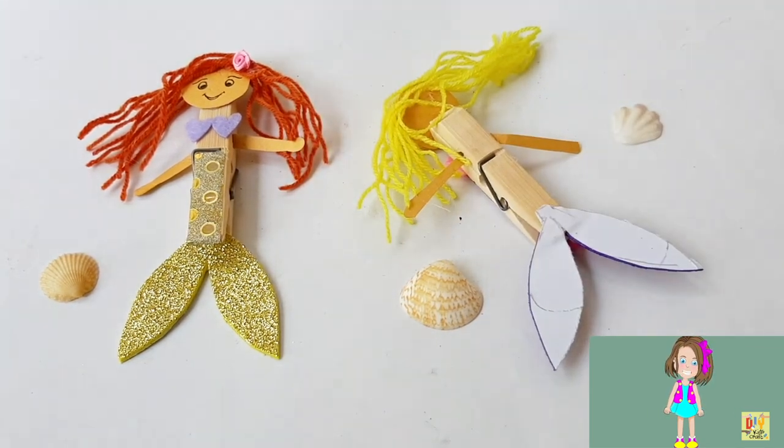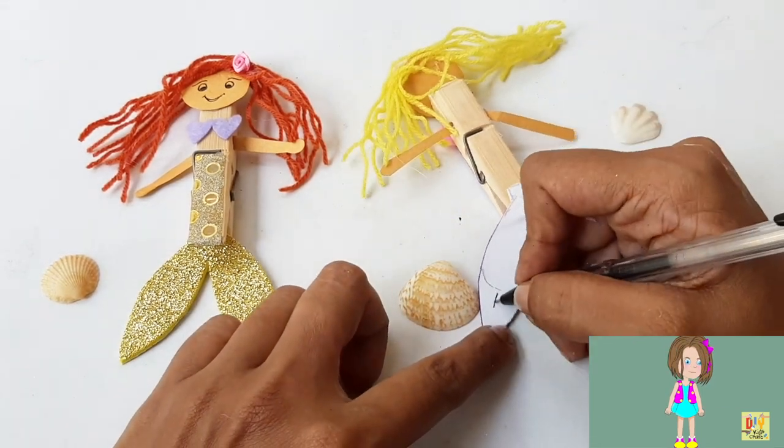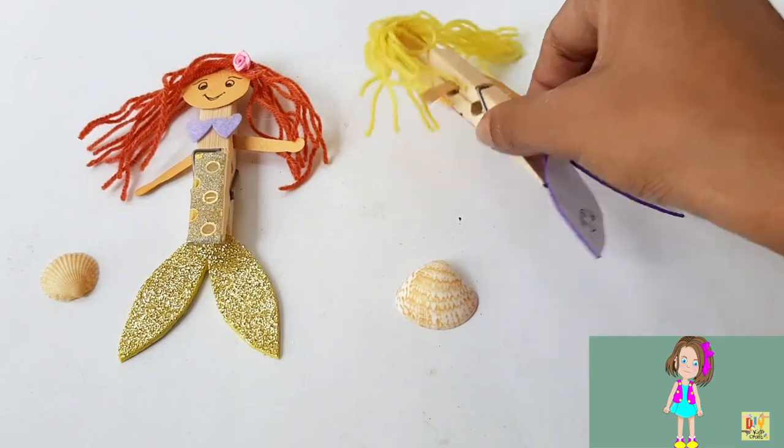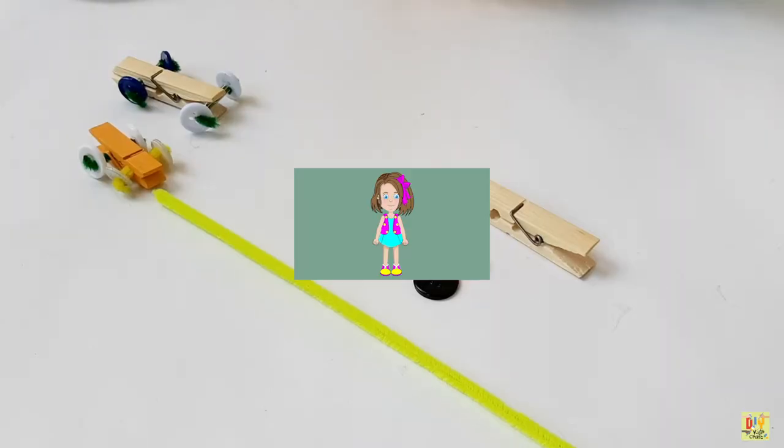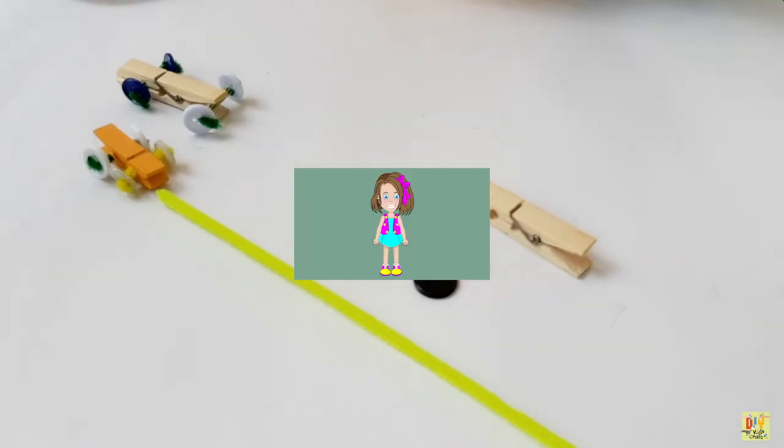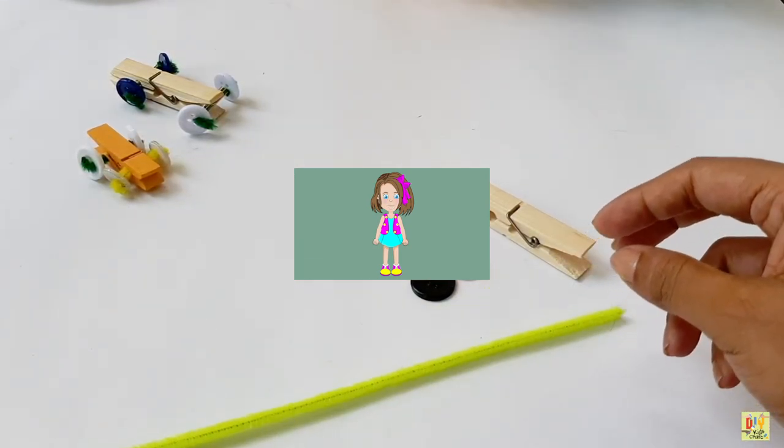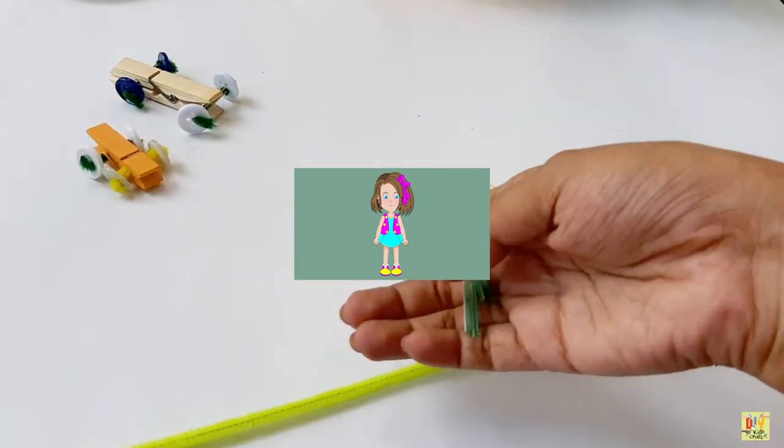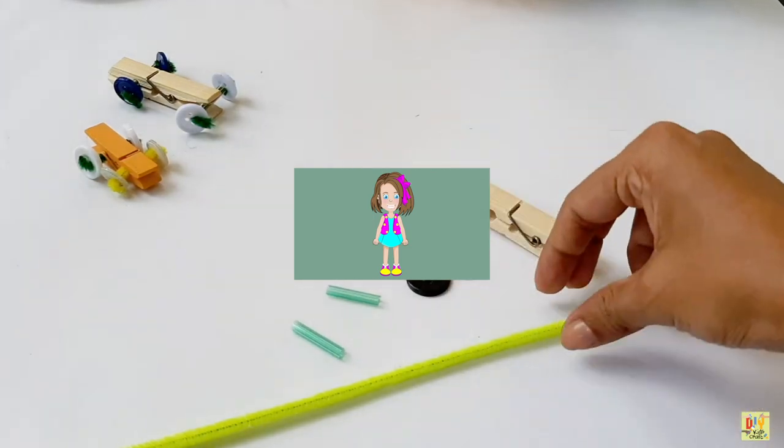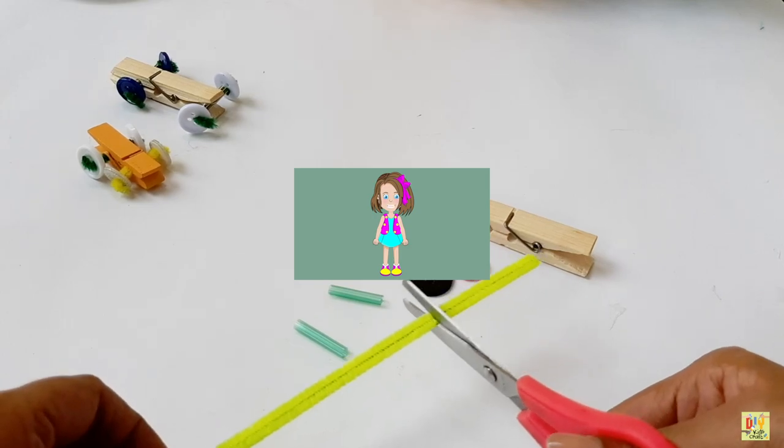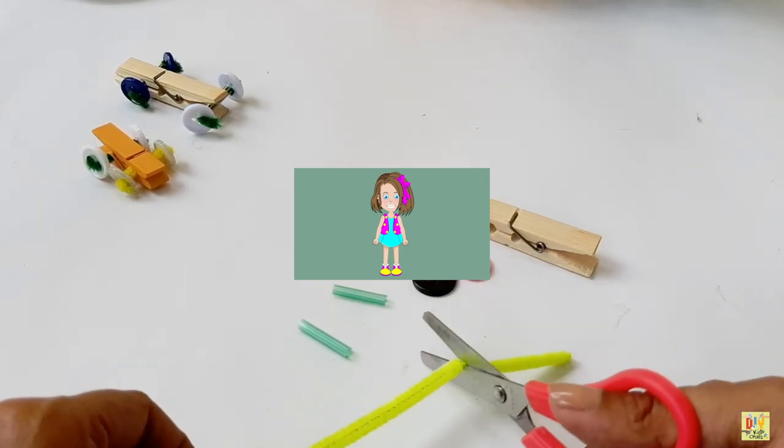Alright kids, so this is gonna be our second craft using a clothespin. For this time, this is a car using a clothespin. First, let's get a clothespin, a button, a straw, and a small bottle brush.